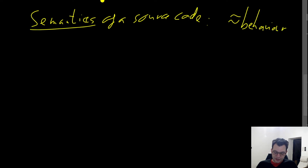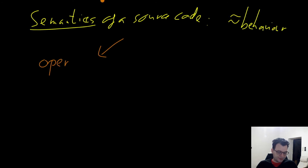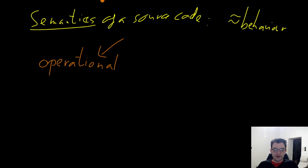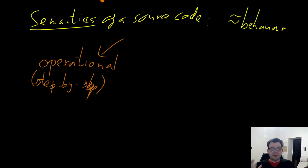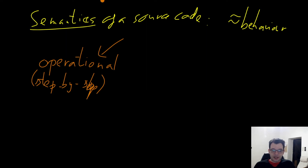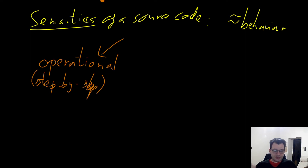There are at least two types of semantics. The first is called operational semantics. This is usually the semantics you learn when you learn a programming language — it is a step-by-step semantics. It basically says that if the program is in a certain state, with particular values of the variables, and the next statement is something like i++, which means increase i by one, then at the next step everything will be the same but the value of i just increases by one.